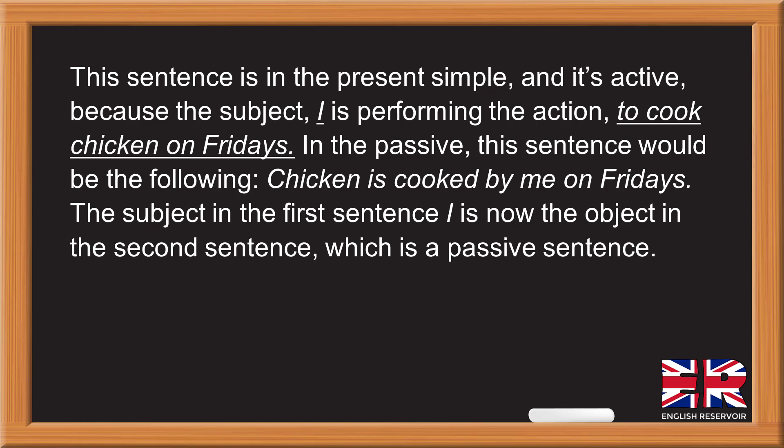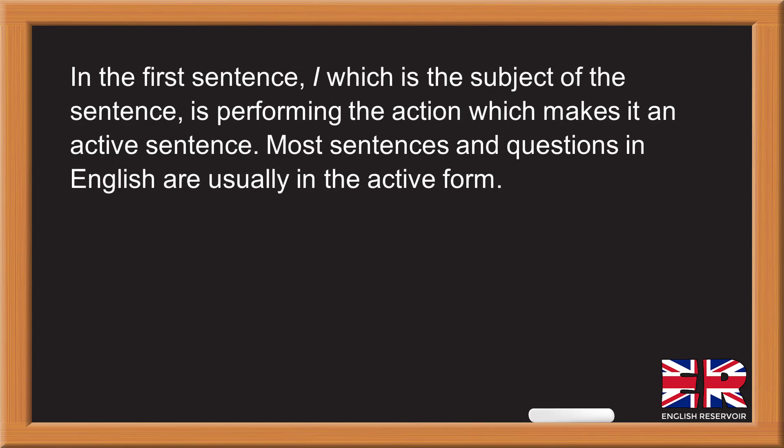In the passive, this sentence would be: 'Chicken is cooked by me on Fridays.' The subject in the first sentence, 'I', is now the object in the second sentence, which is a passive sentence. In the first sentence, 'I', which is the subject, is performing the action, which makes it an active sentence.